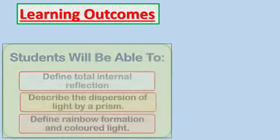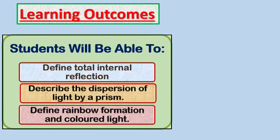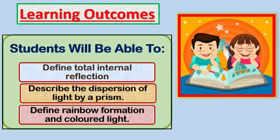Learning outcomes: at the end of this lesson, students will be able to define total internal reflection, describe the dispersion of light by a prism, and also define rainbow formation and colored light.